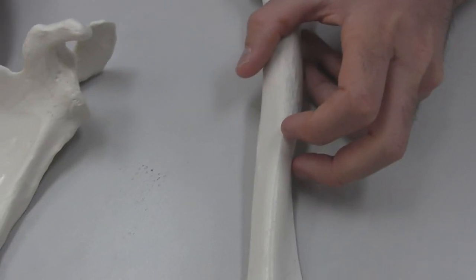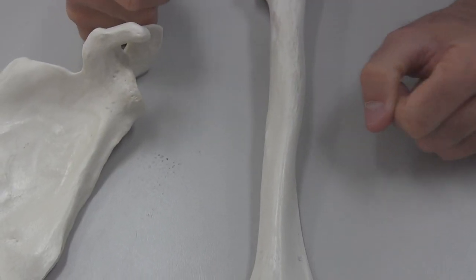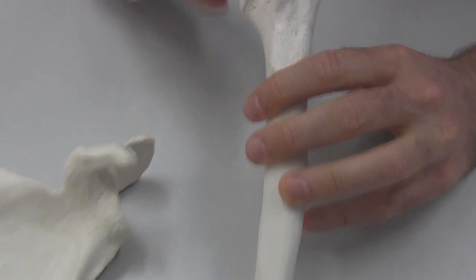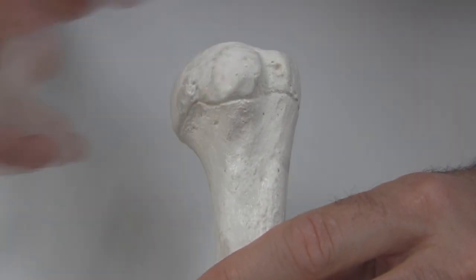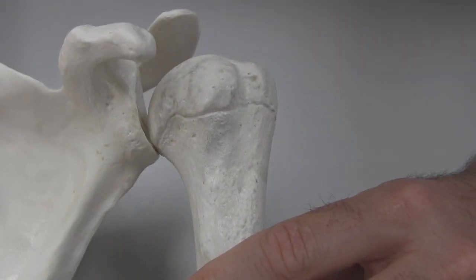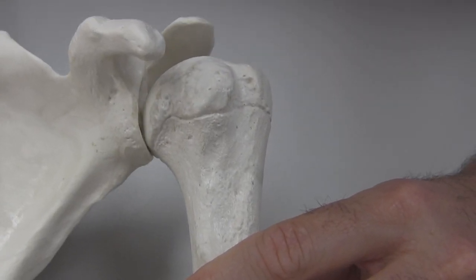If we look closely at the humerus now, the humerus has some distinguishing features. Number one, we've got the head of the humerus, which is the big, round, spherical object. That head of the humerus fits nicely into that glenoid cavity.